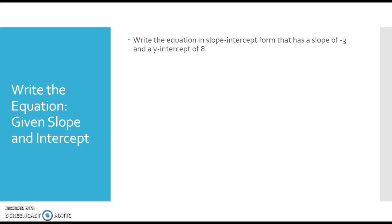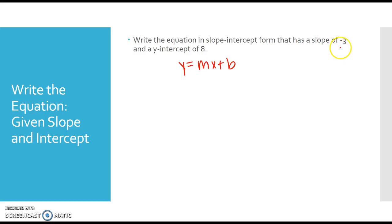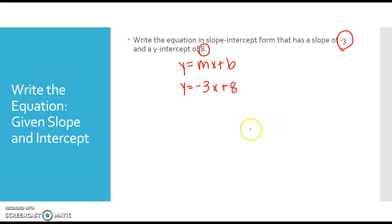Writing equations in slope-intercept form — you've got three options. The first: you might be given the slope and the intercept. That's the easiest one. For example, write the equation in slope-intercept form with a slope of negative 3 and a y-intercept of 8. Slope-intercept form is y equals mx plus b. Negative 3 is my m, 8 is my b. So I get y equals negative 3x plus 8. Easiest one to do.